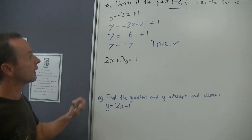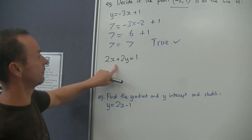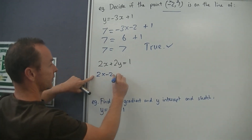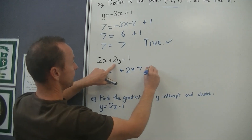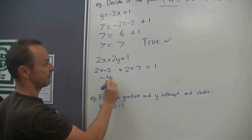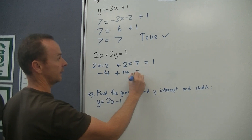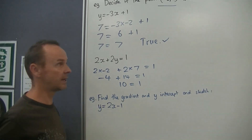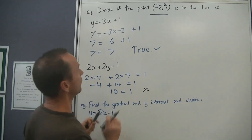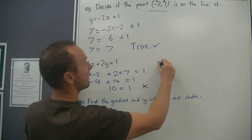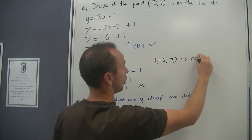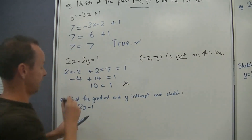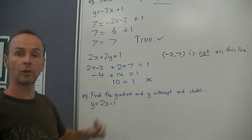Let's try the next one. It's just in a different form. So 2x — that's 2 lots of minus 2 because minus 2 is x — plus 2 lots of 7 equals 1. 2 lots of minus 2 is negative 4, plus 14 equals 1. Negative 4 plus 14 is 10. 10 equals 1 — does 10 equal 1? No, it doesn't. Therefore, the point minus 2, 7 is not on this line, because those two values are not the same.